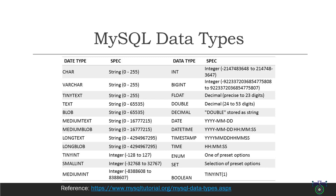The char data type stores fixed-length character strings and takes up as many bytes as the defined length of the string. For example, char(10) will take up 10 bytes of storage. The varchar data type stores variable-length character strings and takes up only the storage needed for the string values plus one or two bytes to record the length of the string.